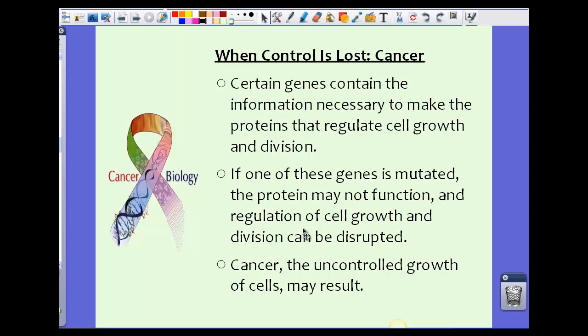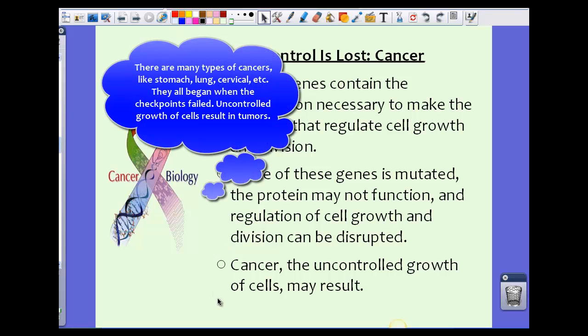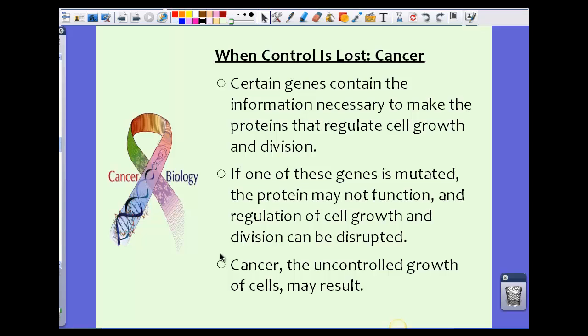If we have that protein malfunction, then what results is cancer, which is just an uncontrolled growth of a cell. So we hear a lot of cancer, lung cancer, cervical cancer, stomach cancer. These are all types of cancer where we have an uncontrolled growth of cells and what may result is a tumor.